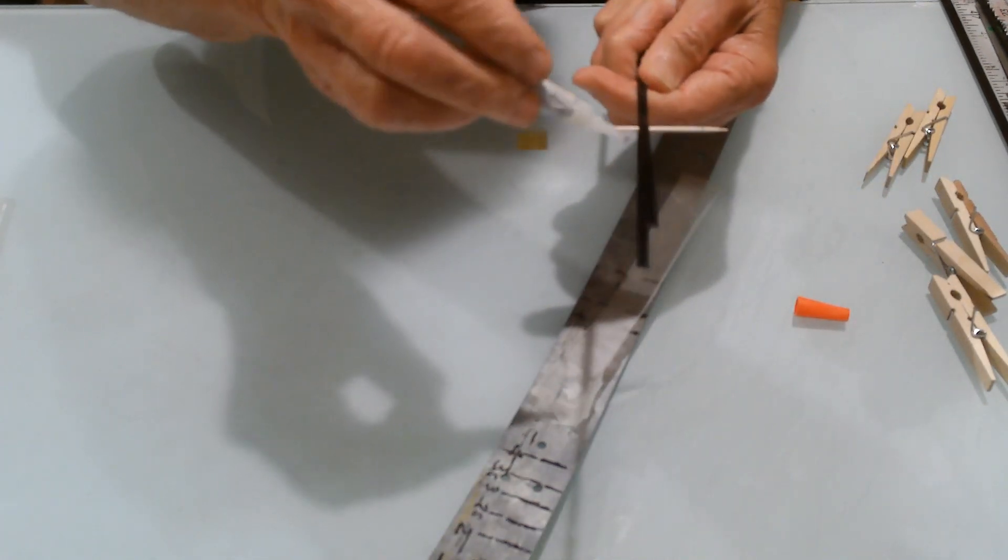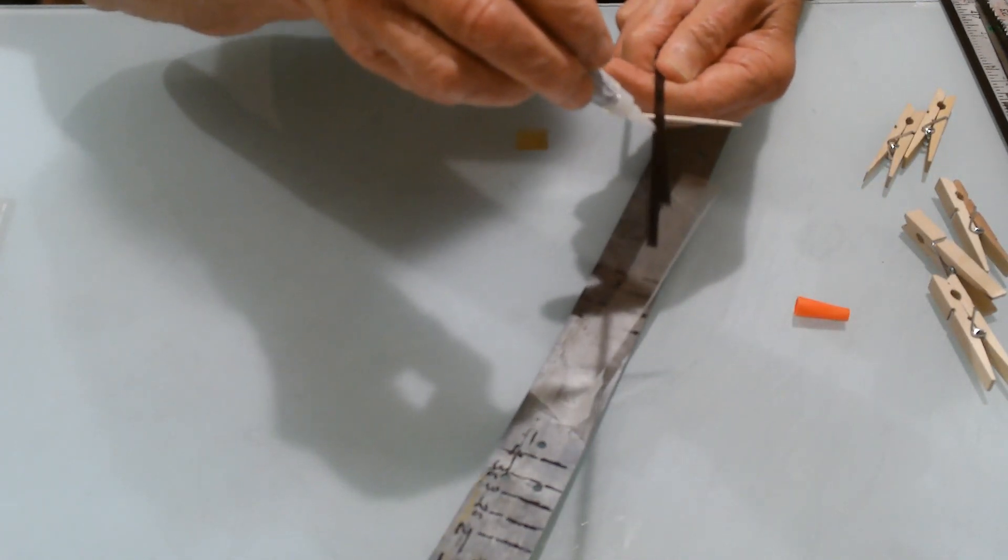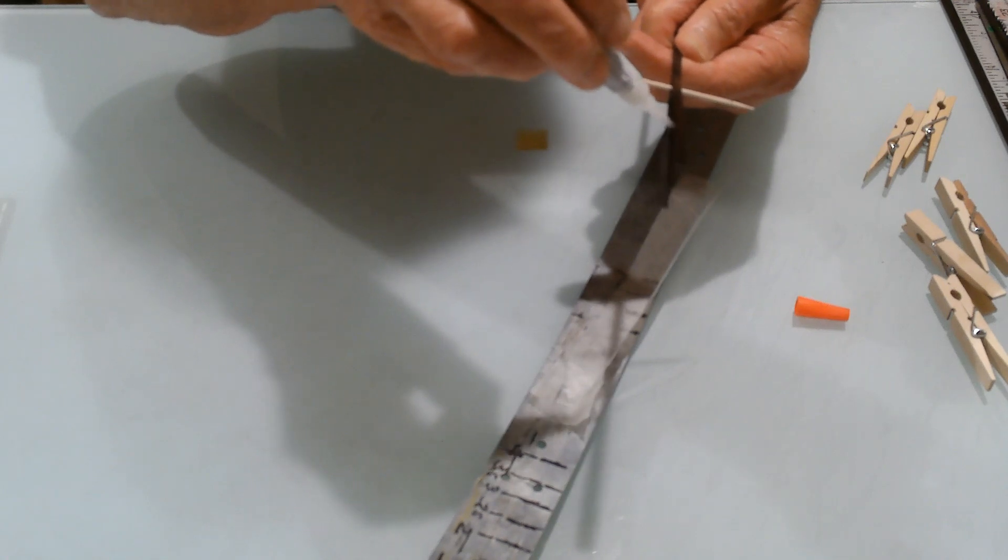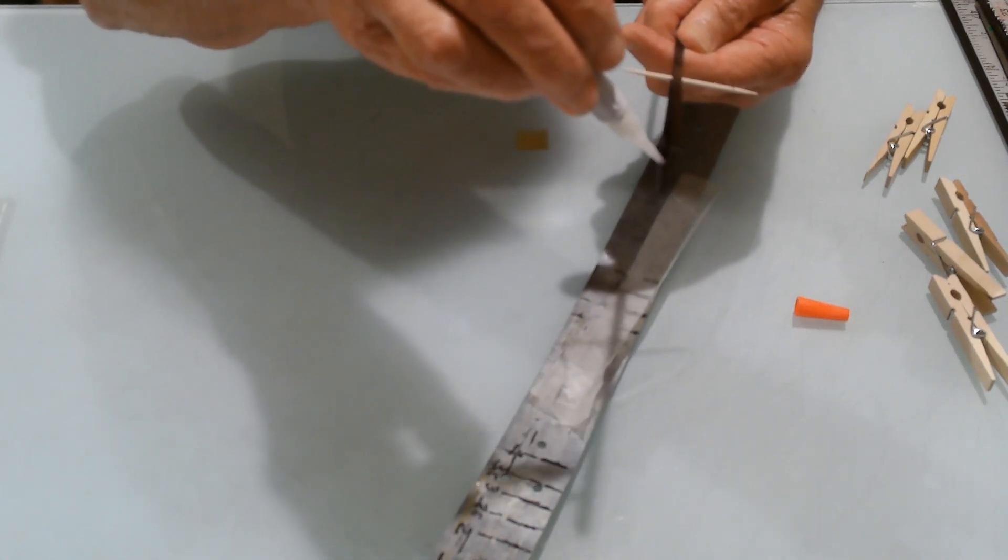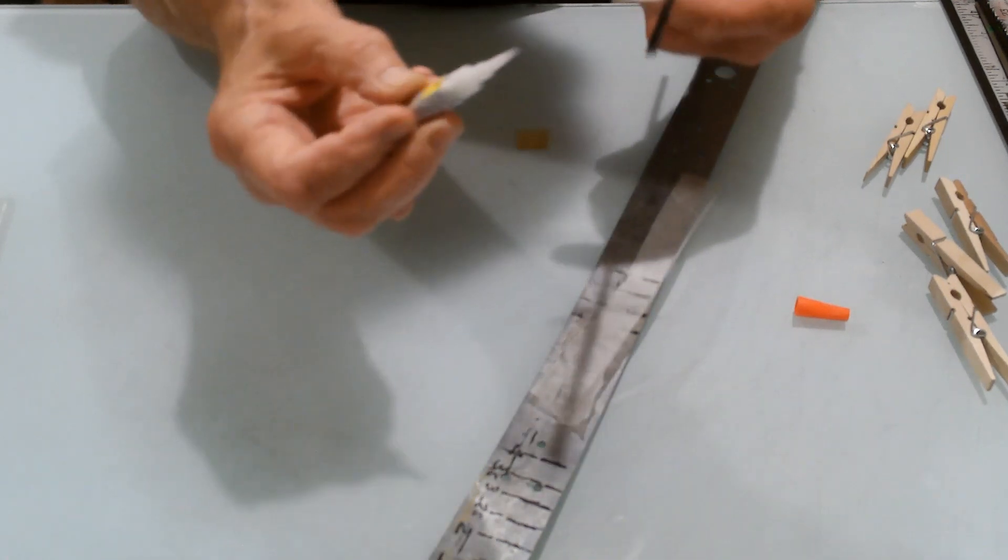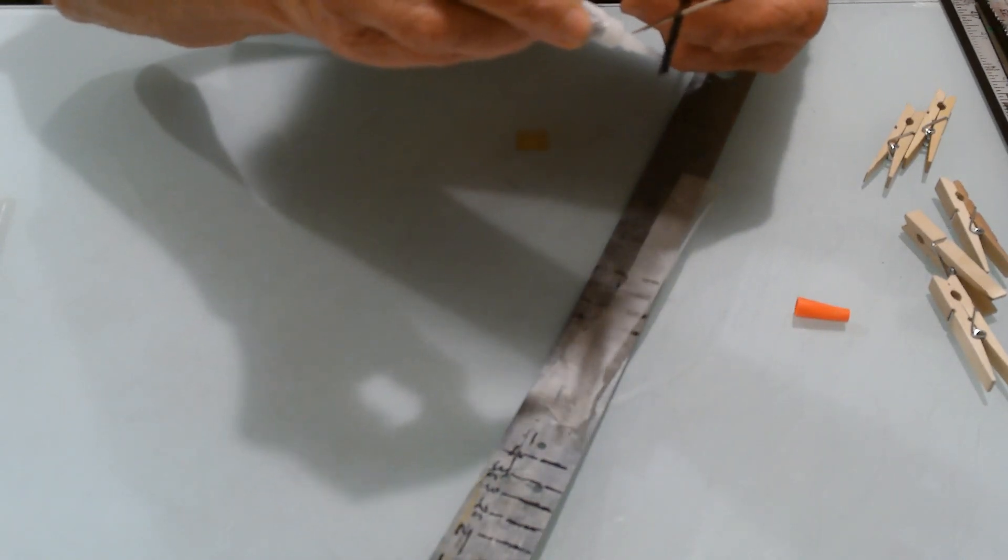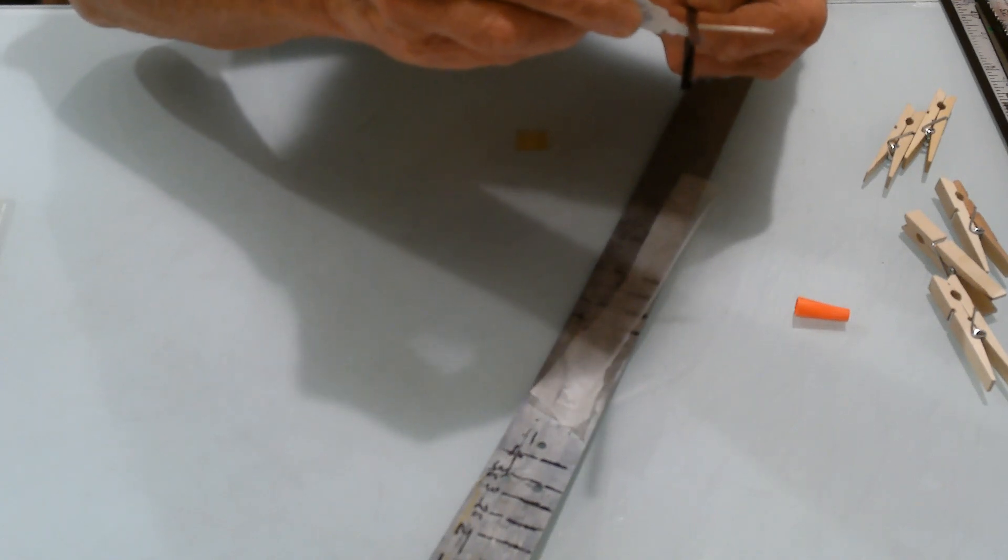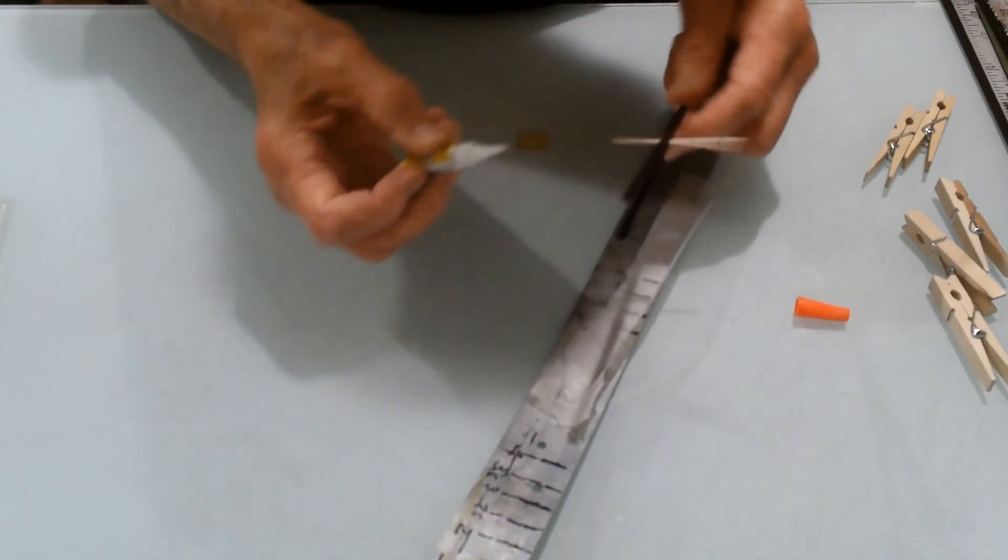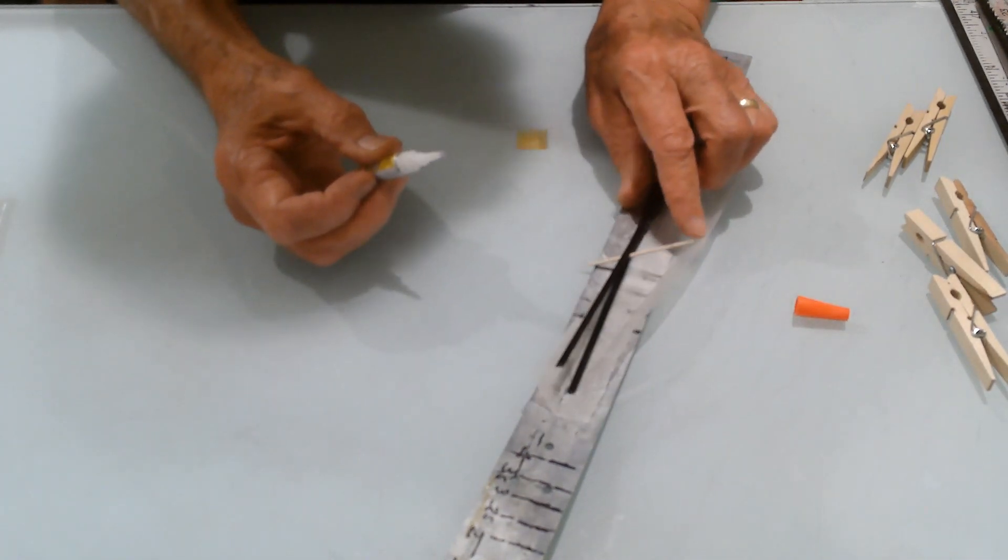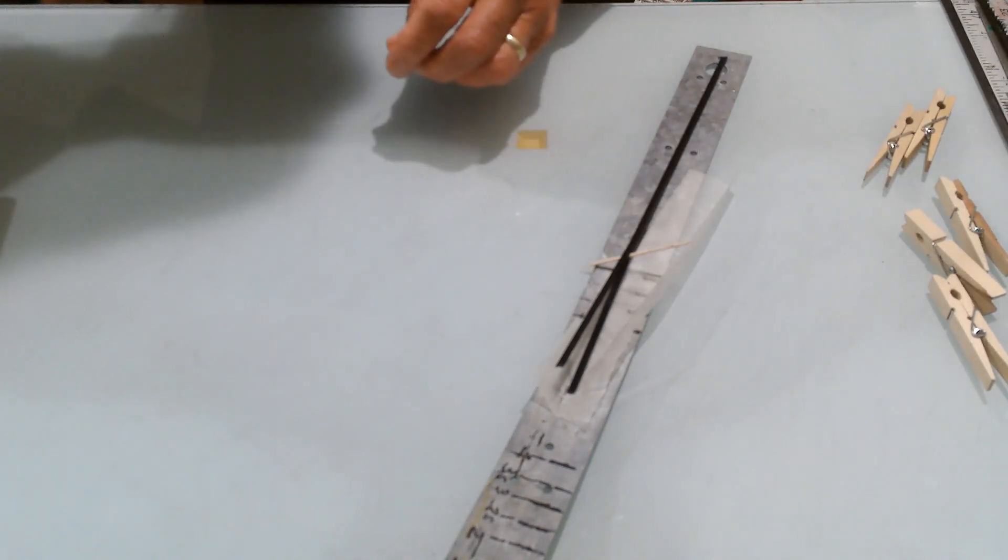So, what I do is I use a toothpick and I separate the split. Then, I apply superglue. I use a liquid. Very inexpensive. I think I get like three or four tubes in a package. And the package probably costs a dollar or something like that.